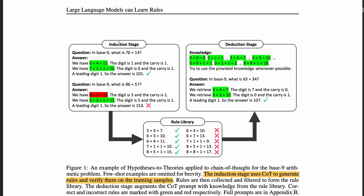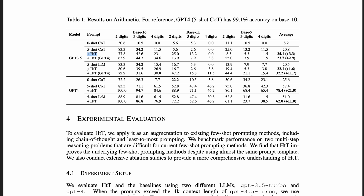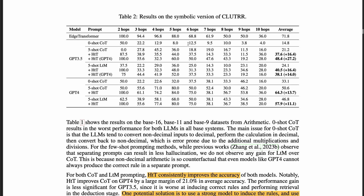Here's an example of how it works: given a set of arithmetic questions with known correct answers, we ask the language model to generate results with step-by-step explanations, then extract rules from the answers by searching string templates with regular expressions. Because we know the ground truth, we know if generated answers are correct, and we only collect rules that appear frequently and are associated more with correct answers. In the deduction stage, we prepend the rule library in the prompt and ask the LLM to use the provided knowledge whenever possible. Since it's hard to retrieve the correct rule from a large number of rules, they used XML tagging to organize rule sets into a hierarchy and asked the LLM to generate the tags. Results showed that H2T outperforms chain-of-thought and least-to-most prompting in both arithmetic and relational reasoning problems.